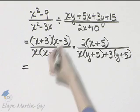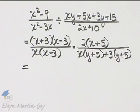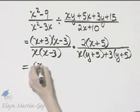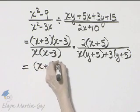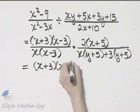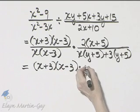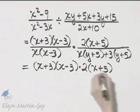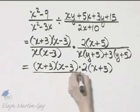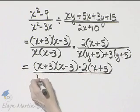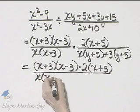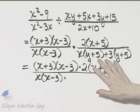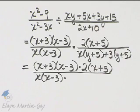But how do you multiply? It's numerator times numerator over denominator times denominator. So let me go ahead and write it that way. Numerator, x plus 3 times x minus 3 times numerator. That's 2 times x plus 5, all over denominator, x times x minus 3 times denominator.